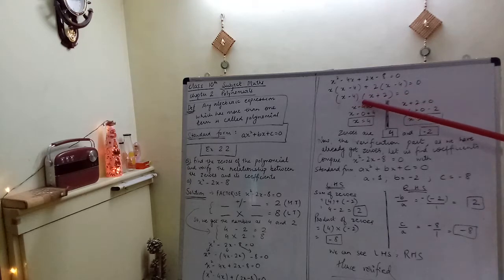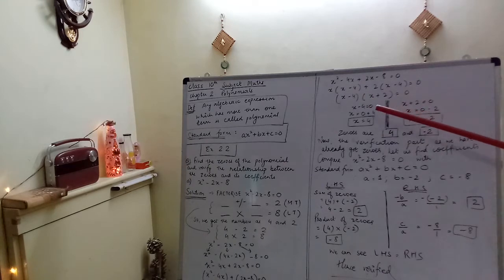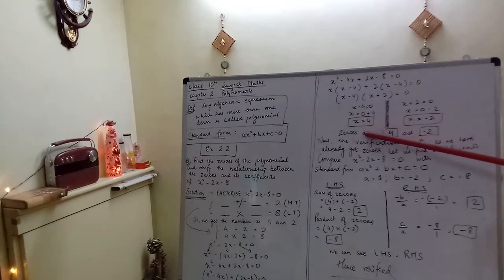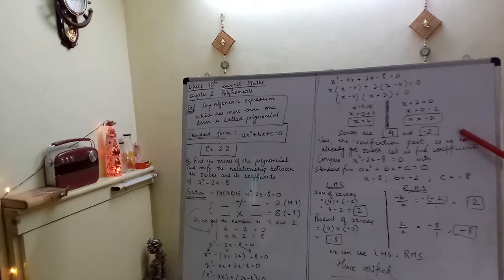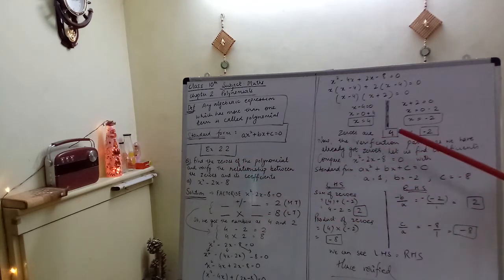Now we have a bracket x minus 4, another bracket is x plus 2. Next step is we will separate them so that we can get the two answers: one, x minus 4 equals to 0; two, x plus 2 equals to 0. From here x's answer will be 4, and from here it will be minus 2. So we got the two answers, 4 and minus 2. So the first question, find the zeros, we got the zeros: 4 and minus 2.